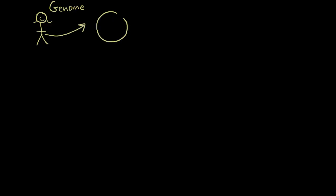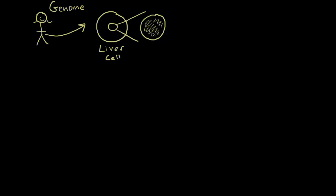So here's our liver cell — I've blown it up like under a microscope. This is our liver cell, and inside of that cell there is the nucleus, the command center. I'm going to pull that nucleus out so you can see it in greater detail. Inside the nucleus is the DNA. Inside the nucleus of every cell in a human being there is DNA, and they are loose threads. When they are in this loose thready state we call them chromatin.